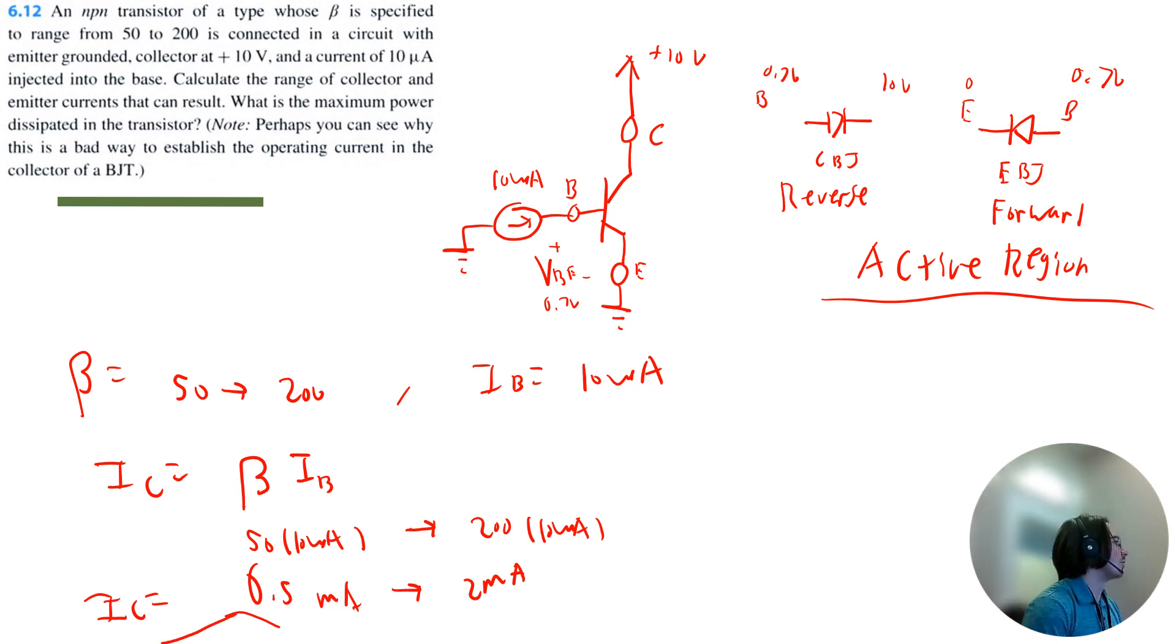So it will range from 0.5 to 2 milliamps. Now we can use IE, emitter current, is going to be equal to beta plus 1 multiplied by base current.